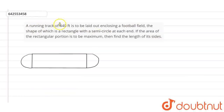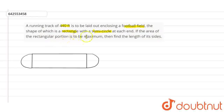Hello guys, we have a running track of 440 feet to be laid out enclosing a football field. The shape of which is a rectangle with a semicircle at each end. If the area of the rectangular portion is to be maximum, then find the length of its sides.